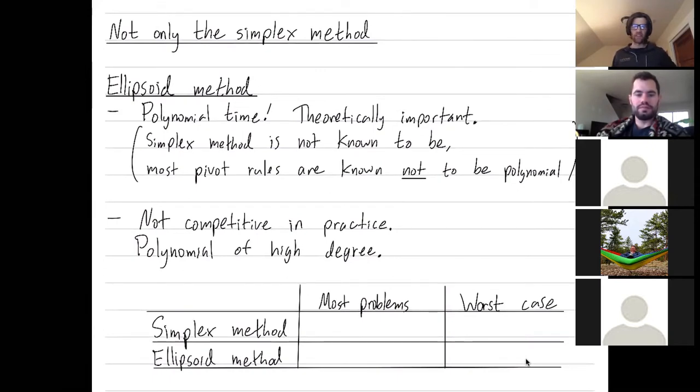So why is the ellipsoid method not competitive in practice? It's polynomial, whereas the simplex algorithm is not. Why is the ellipsoid method not fast? So one explanation for that would be that yes, it's polynomial, but it's polynomial of a very high degree.